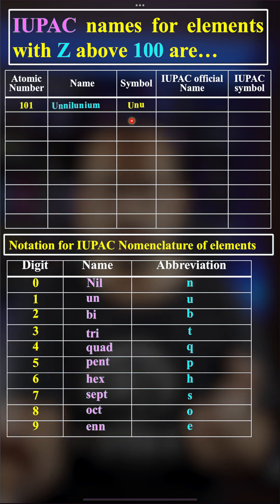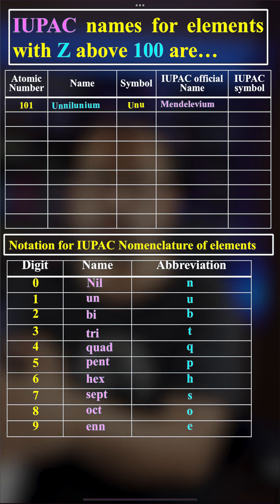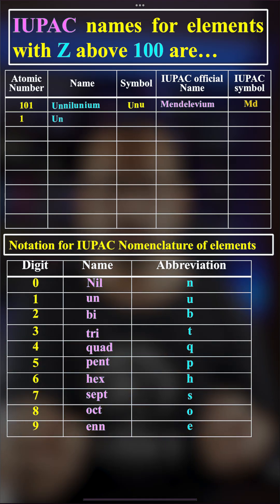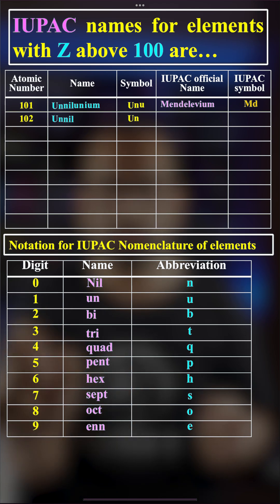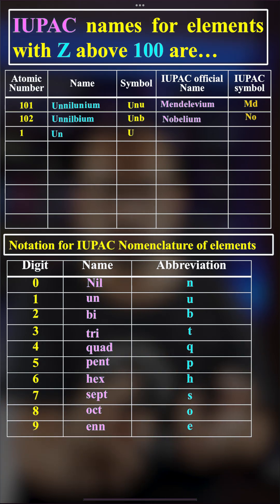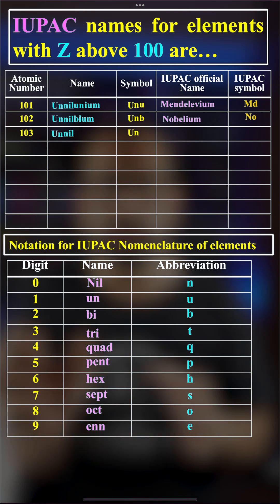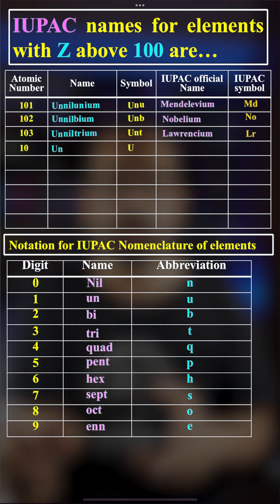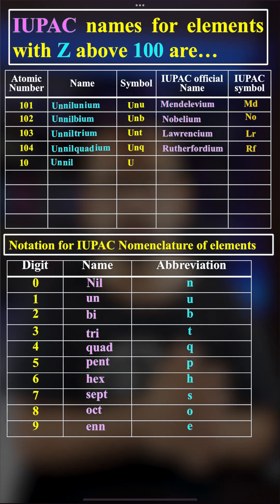For element 101, it is Unnilunium (symbol Unu). Since it was discovered by Mendeleev, we also call it Mendelevium. For element 102, it is Unnilbium (symbol Unb). For element 103, it is Unniltrium (symbol Unt). Element 104 and so on follow the same pattern. Thank you.